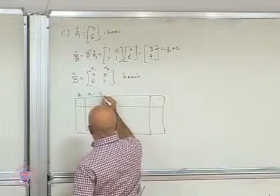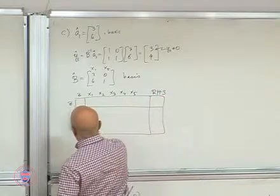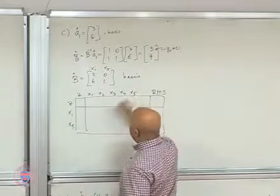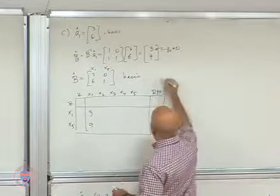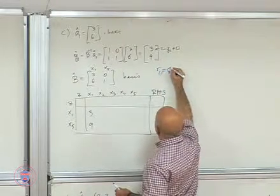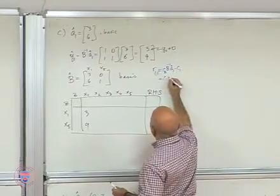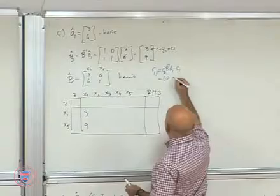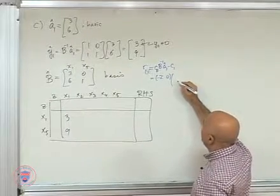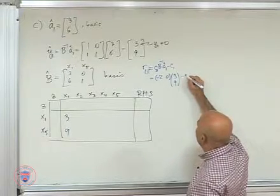In other words, we revise the tableau. 3, 9 goes in here. I need also R1, which is CB · B_inverse · A1_cap minus C1. CB is minus 2, 0. B_inverse · A1_cap is 3, 9 minus C1, minus 2.